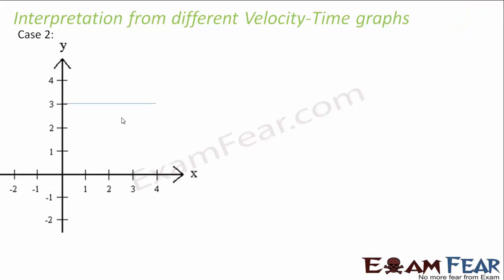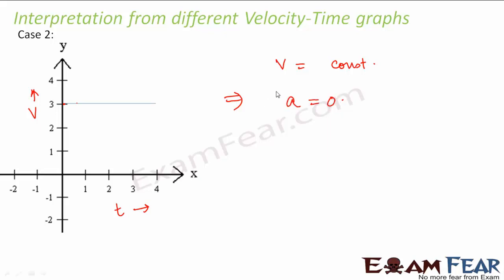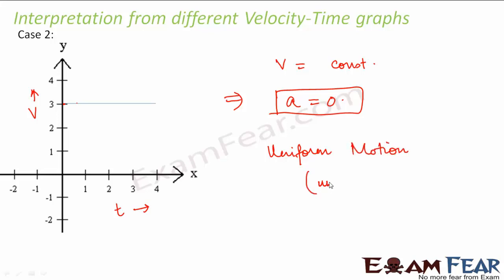In the second scenario, velocity remains constant with time — even as time keeps increasing, velocity stays at a constant value, say 3. This means acceleration is zero, so the body does not accelerate at all. The body moves with uniform velocity — this represents uniform motion.